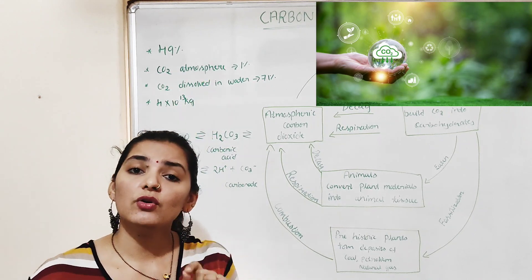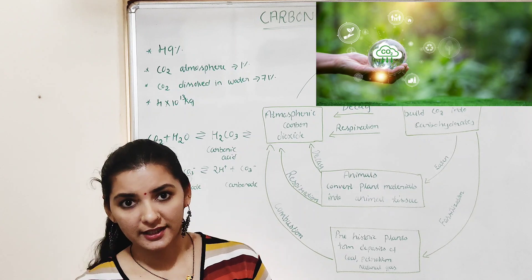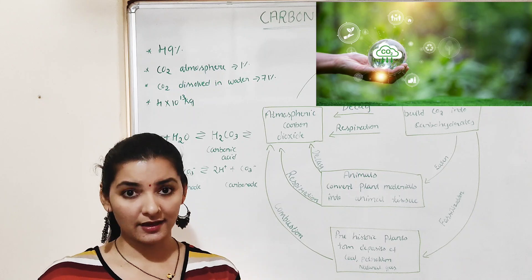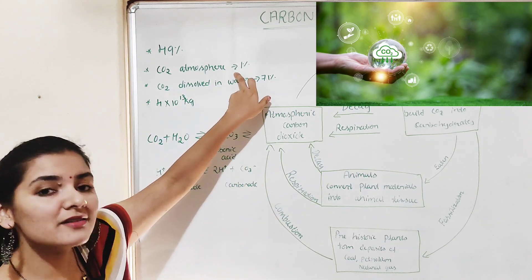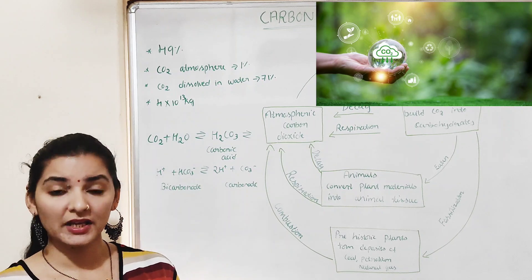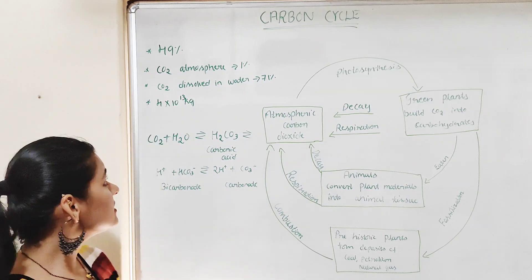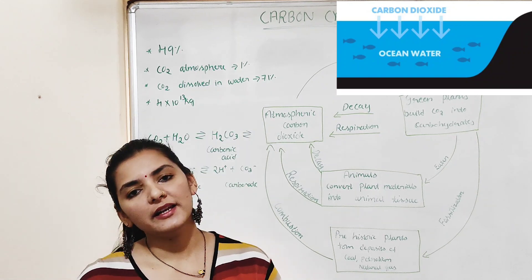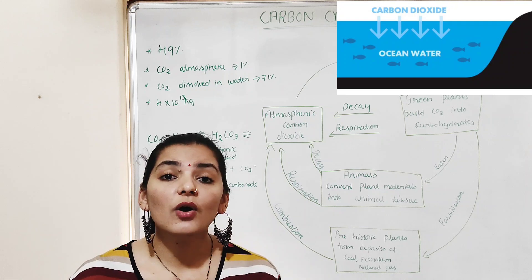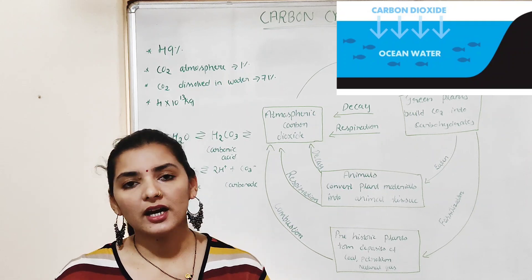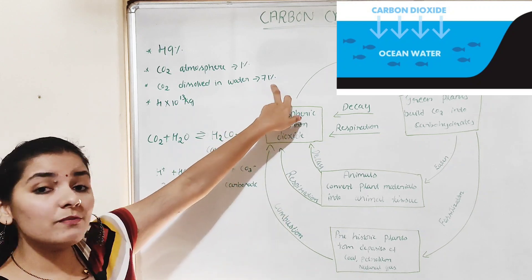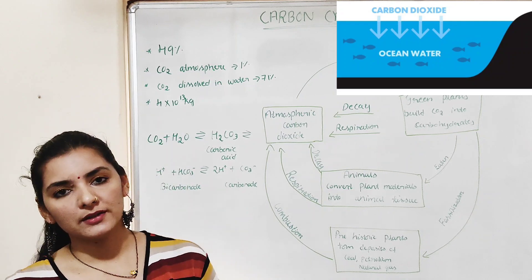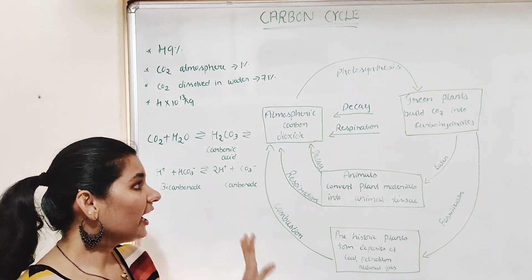Atmospheric carbon dioxide constitutes only about 1 percent of the total carbon present on earth. The main source of carbon is carbon dioxide dissolved in the water of the earth — both fresh water and marine water — which constitutes about 71 percent of the total carbon present on earth.